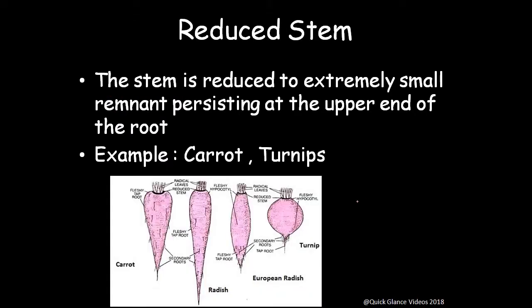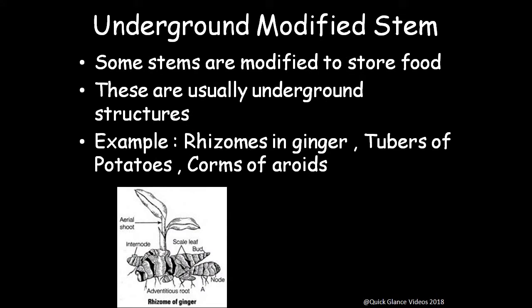Another form of stem is the reduced stem — reduced to an extremely small remnant persisting on the upper end of the root, like a disc form. Examples include carrot and turnip. Underground modified stems are modified to store food as their main function. Examples include rhizomes of ginger, tubers of potato, and corms of aroids.